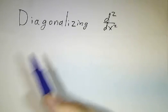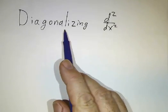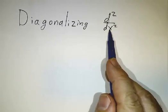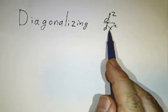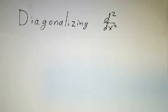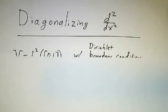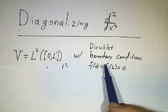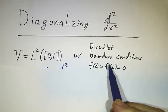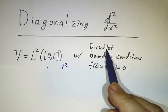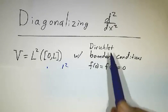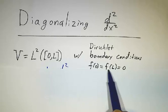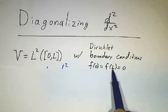In this video, we're going to see how to diagonalize an operator — the second derivative operator — on functions on an interval. Whenever you deal with a derivative operator, you need boundary conditions, and we're going to apply Dirichlet boundary conditions, which means we're interested in functions that vanish at both ends of our interval.